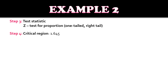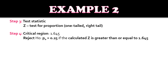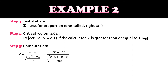For step four, we have the critical region. For alpha 0.05 under one-tailed, the critical value is 1.645. We will reject the null hypothesis — population proportion equals 0.25 — if the calculated Z is greater than or equal to 1.645. For step five, substituting values: Z equals 0.32 minus 0.25 divided by the square root of 0.25 times 1 minus 0.25 over 300, giving Z equals 2.8.